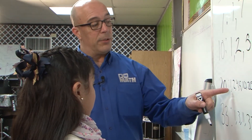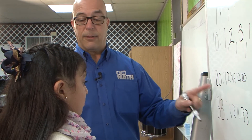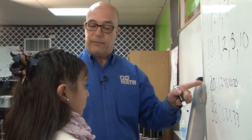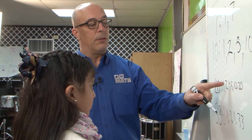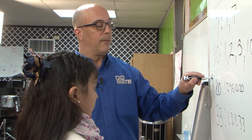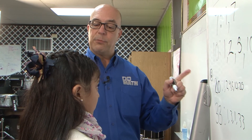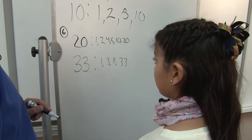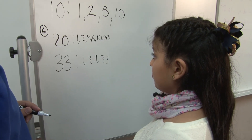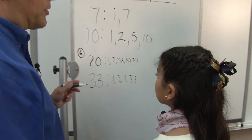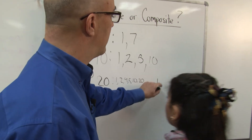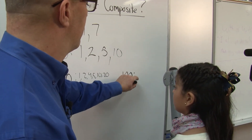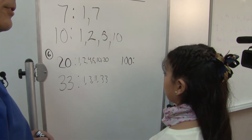Can you think of a number that will have more factors — more numbers to go into it — than 20? Can you think of any number that might have a longer list? Because 20 has 6 numbers in it. Can you think of anything that has more than 6? Maybe 100. Let's try 100. Why don't you go ahead and start listing factors for that.